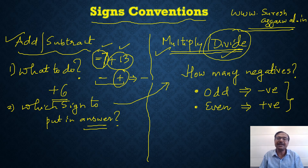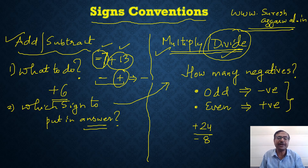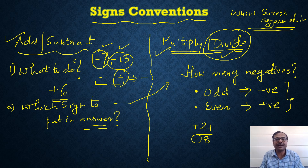For example, if you divide 24 by minus 8, the numerator is positive and the denominator is negative — that is one negative, which is odd. So the answer will be negative. 24 divided by 8 is 3, therefore the answer is minus 3.